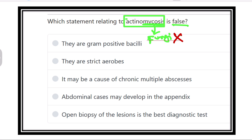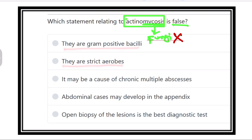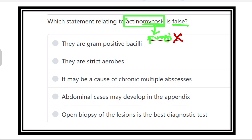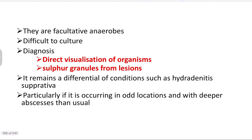Now see the options: (A) they are gram positive bacilli, (B) they are strict aerobes, (C) it may cause chronic multiple abscesses, (D) abdominal cases may develop in the appendix, and (E) open biopsy of the lesion is the best diagnostic test. We have to find which is not true regarding actinomycosis.